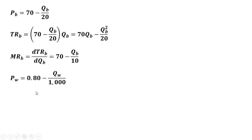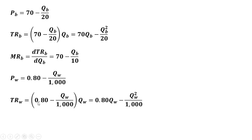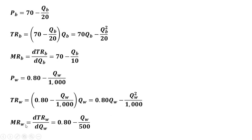Doing the same thing for wood chips, we have the inverse demand. We multiply it through by Q to get total revenue. Taking the derivative of total revenue gives us the marginal revenue of wood chips. When we take the derivative, we have 2 divided by 1,000, so that's just 1 over 500.